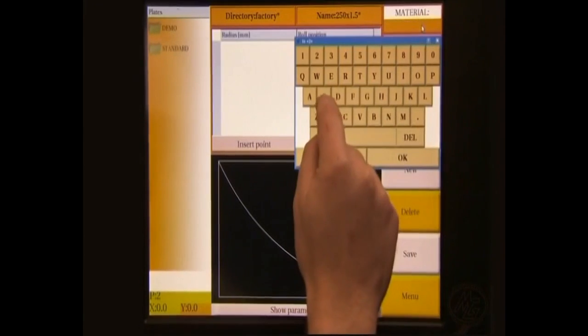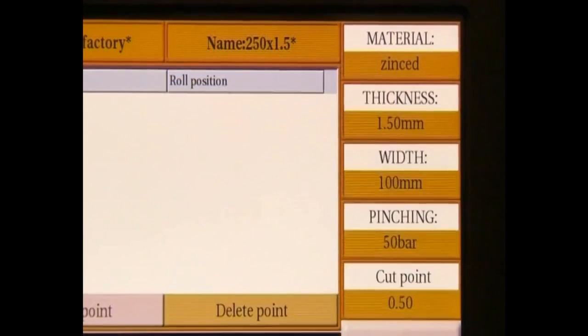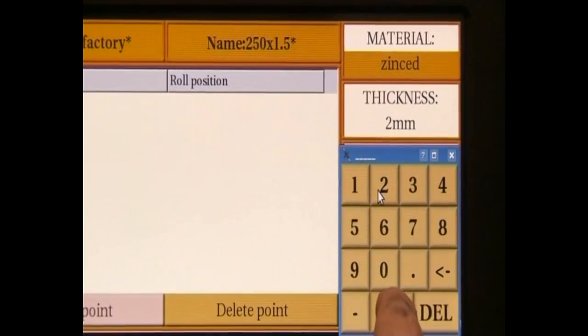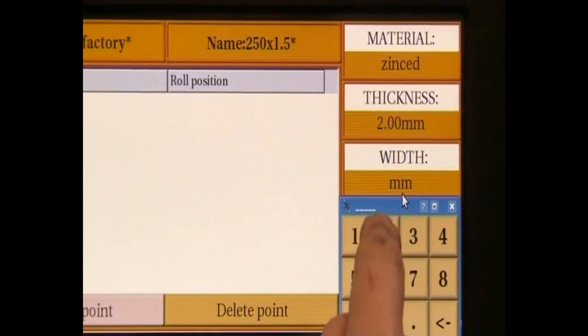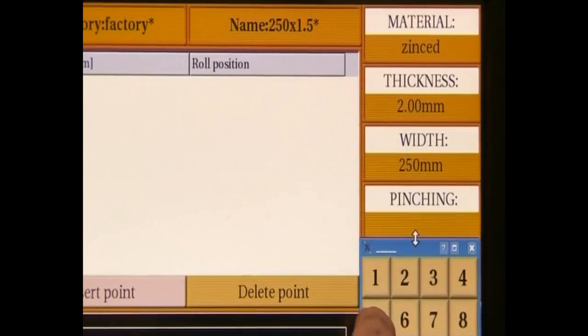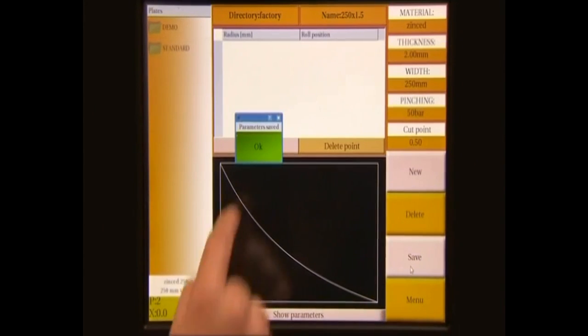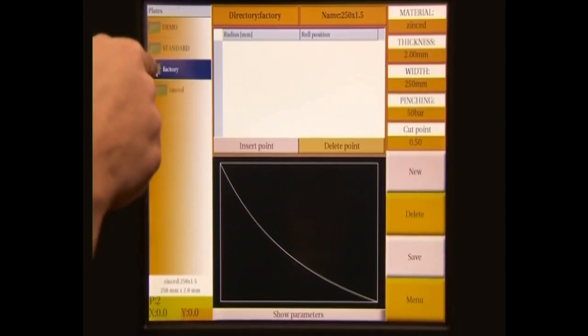We go on with the name of the material, the thickness of the plate and its width. Let's complete with a pinch in pressure value. Now we save the new file so that it will be stored in the plates archive.